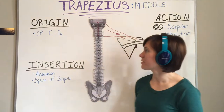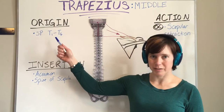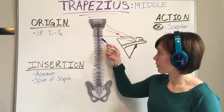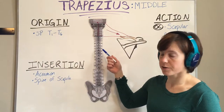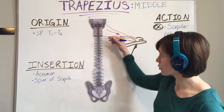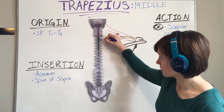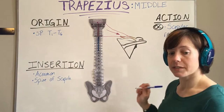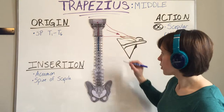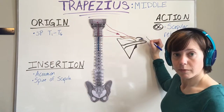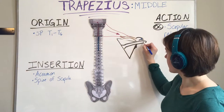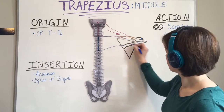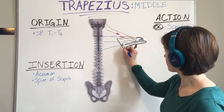The middle trapezius originates on the spinous process of thoracic vertebrae 1 to thoracic vertebrae 6, so pretty much the upper half of the thoracic vertebrae. It will then come and insert on the acromion of the scapula and the spine of the scapula.